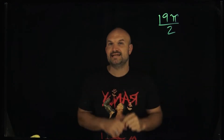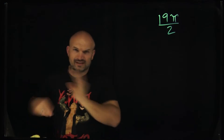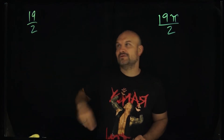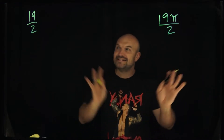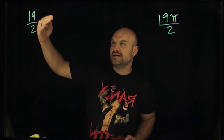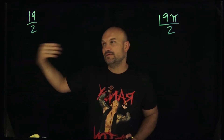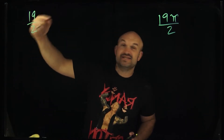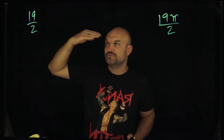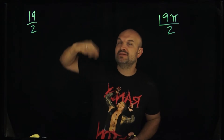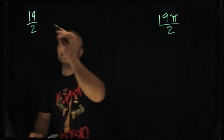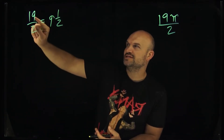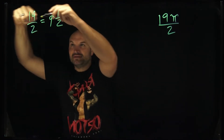The first thing we need to do is break up 19 over 2. Forget about the pi for a second — just take 19 over 2. That is an improper fraction, and we convert improper fractions into mixed numbers by asking how many times the denominator divides evenly into the numerator. Two goes into 19 nine times with a remainder of one, so we can rewrite this as nine and one-half.